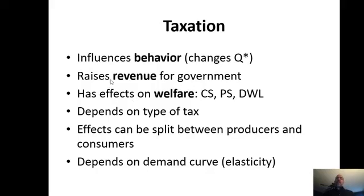We're going to use supply-demand graphs to draw a tax. Then we're going to talk about the effects on welfare: consumer surplus, producer surplus, and deadweight loss. We're going to see that taxation transfers money to the government and takes away welfare from consumers and producers, but it also does reduce overall society welfare. It depends on the type of tax — people are trying to structure the most effective tax. You might hear about Pigouvian taxes and things like that, but right now I'm just going to draw it as one simple tax.